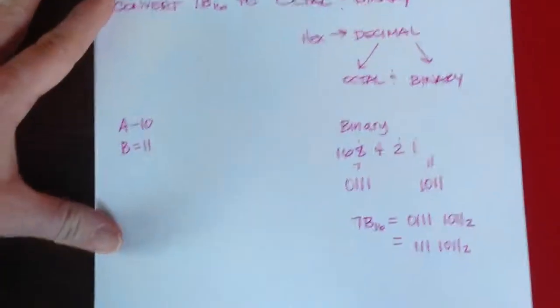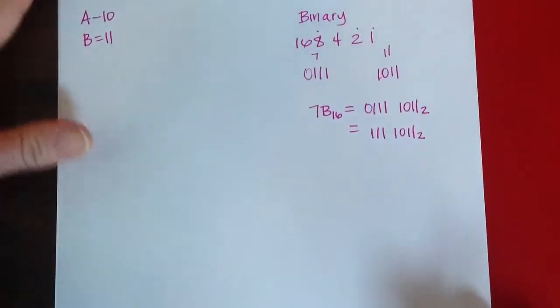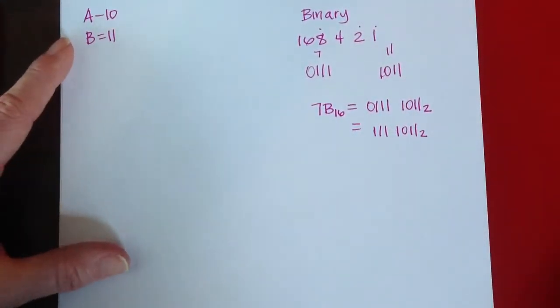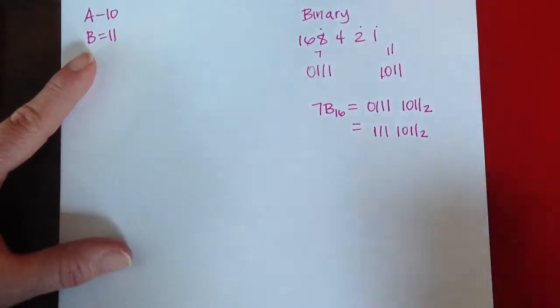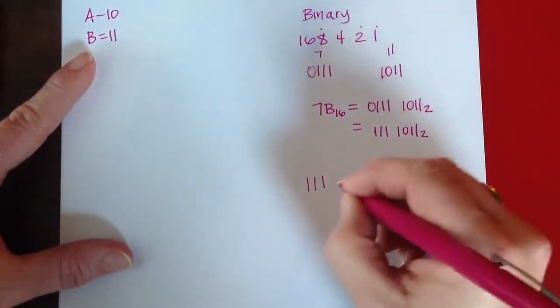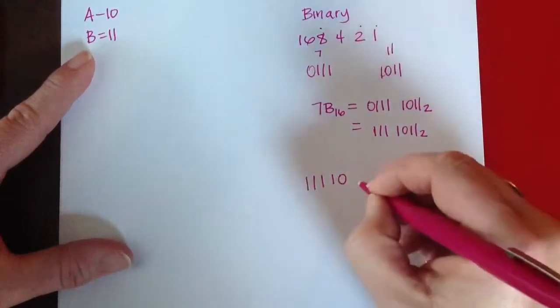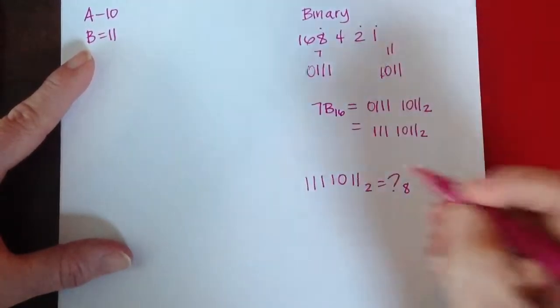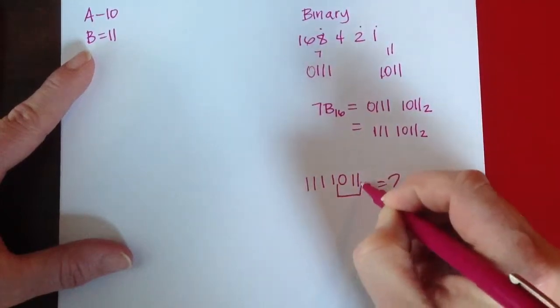Now if I want to get from there to octal, remember that we take the binary numbers and put them in groups of 3. So we have 1, 1, 1, 1, 1, 1, 0, 1, 1, base 2. And what's that equal to in base 8? So let's make groups of 3 here.